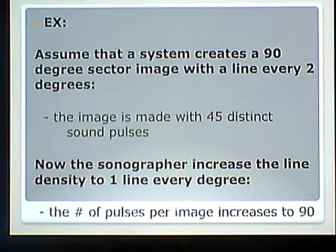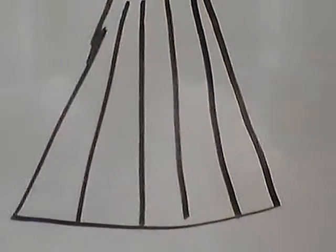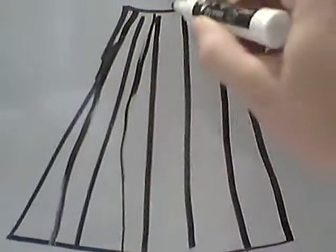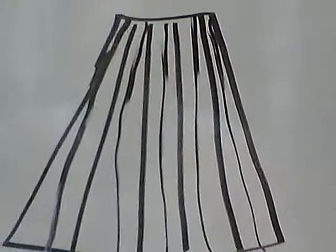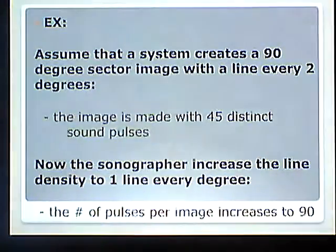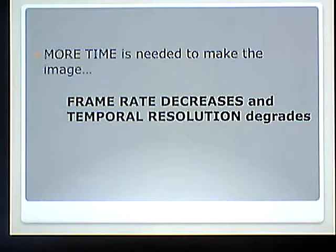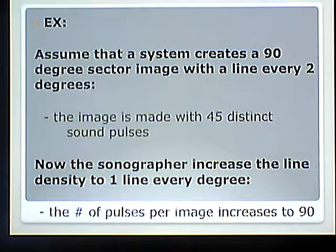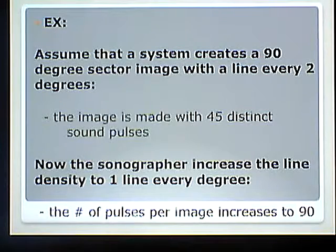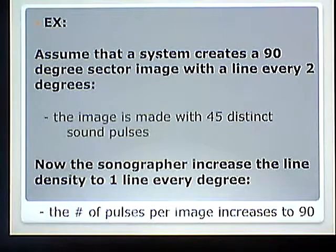If the sonographer increases line density to one line every degree, the number of pulses per image increases to 90. All that happened is the gaps were filled in — more lines, more pulses, more time needed to make the image, therefore frame rate decreases and temporal resolution degrades. This works in reverse too — reducing line density reverses the process. It's the same concept both ways.